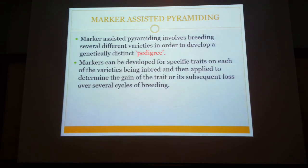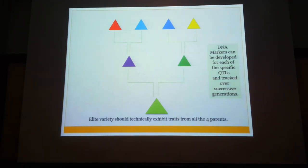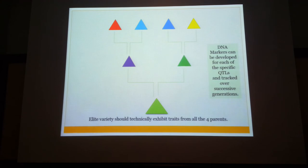Another aspect is marker assisted pyramiding, in which we work with several varieties to obtain a single plant. At the top of the slide you see four varieties — red, blue, blue, and yellow — which need to be crossed into a single hybrid pedigree line. You cross the first two varieties to obtain the first generation, then repeat for the other two varieties, obtaining F1 hybrids, and then cross those F1s to obtain F2. You can do this with any number of varieties — for example, 16 varieties divided into 8 groups of 2. With four varieties, you require two breeding cycles.